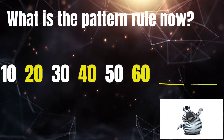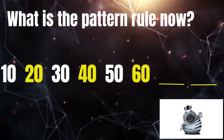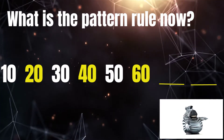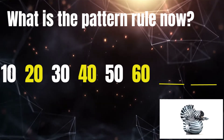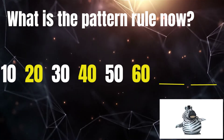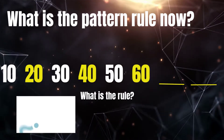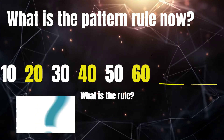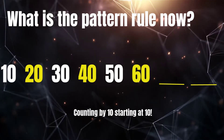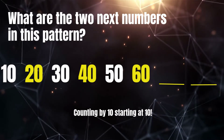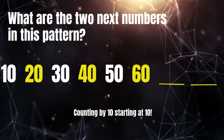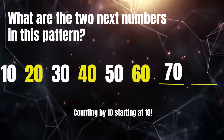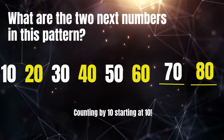What is the pattern rule now? Count with me. Ten, twenty, thirty, forty, fifty, sixty. What's the pattern rule? Counting by ten, starting at ten. You got it! What are the next two numbers? Seventy, eighty. Fantastic!